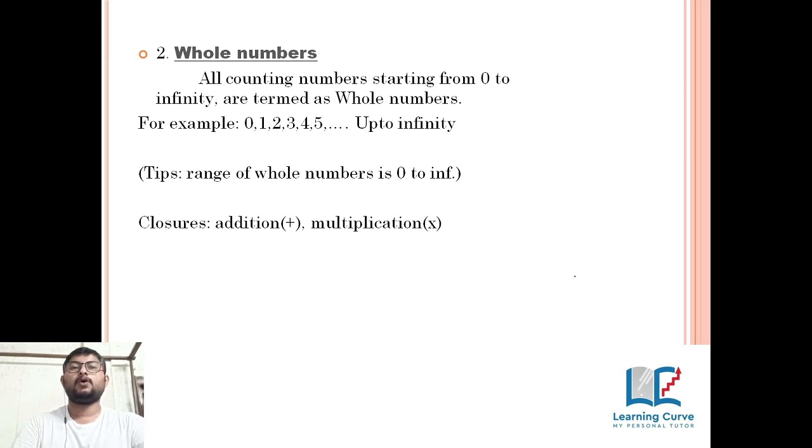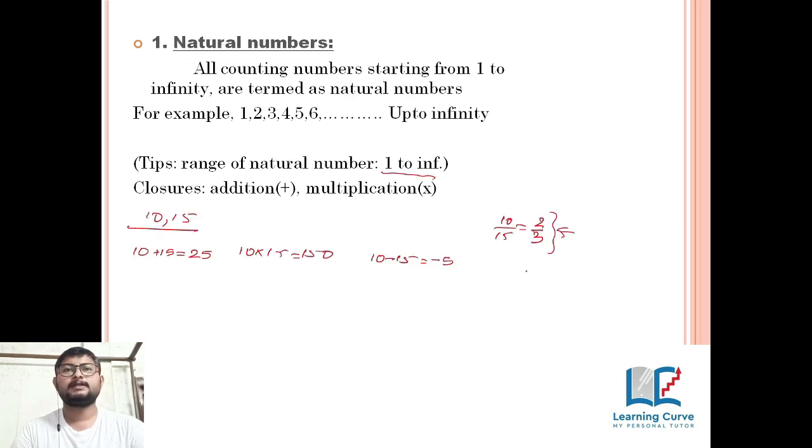What are whole numbers? All counting numbers starting from zero to infinity are whole numbers. Zero, one, two, three, four, five, six, up to how much you can count. See carefully, in natural numbers we were starting our counting from one.